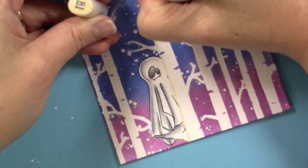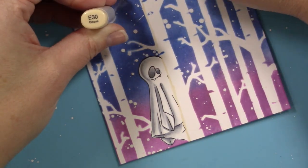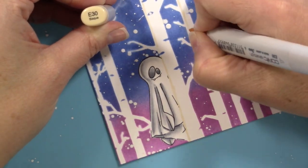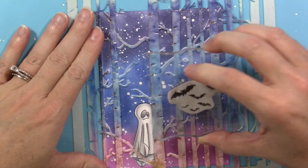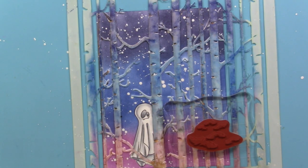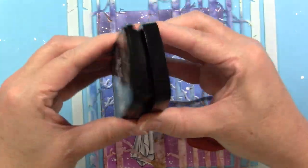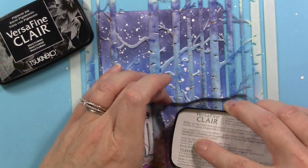When I color the trees I do a very small thin shadow on the trees, making sure to stay away from the Versifying Claire that I inked the background with.